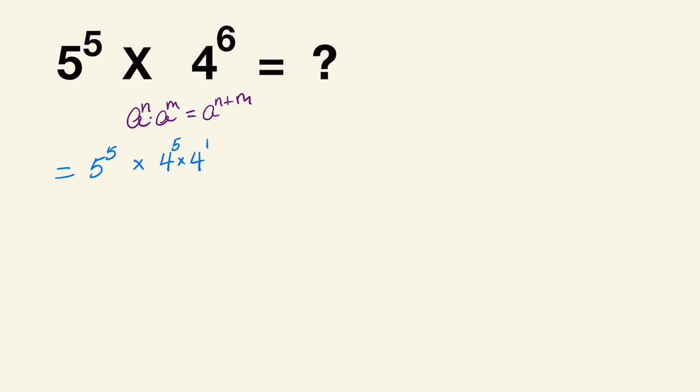This is the other exponent rule that we need. a raised to the n times b raised to the n is going to equal a times b raised to the n.